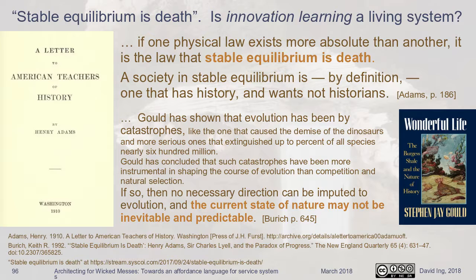Systems in equilibrium: the only true equilibrium is death — stable equilibrium is death. If you're not in a state of death, you need to be in a state where all forces are working in the right direction. There's an idea from Gould about punctuated equilibrium — in effect, multiple stable states over time. That's how system figuring has changed.